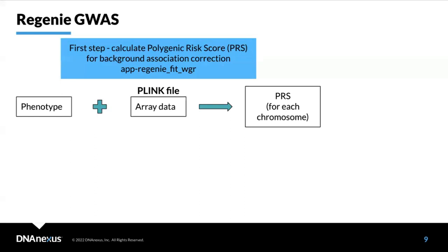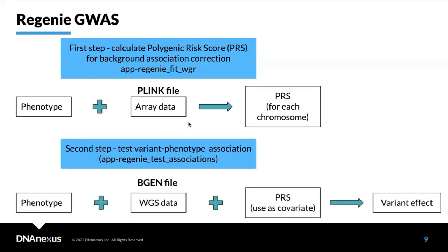For step one, we calculate a polygenic risk score in Regenie GWAS. The inputs are phenotypic data plus array data in plink file format. This step is typically done on merged chromosomes and produces a polygenic risk score for each chromosome. For step two, we run tests for variant-phenotype association. The inputs are phenotypic data, whole genome sequencing data in bgen format, plus the polygenic risk score now used as a covariate. This results in variant effect computation.